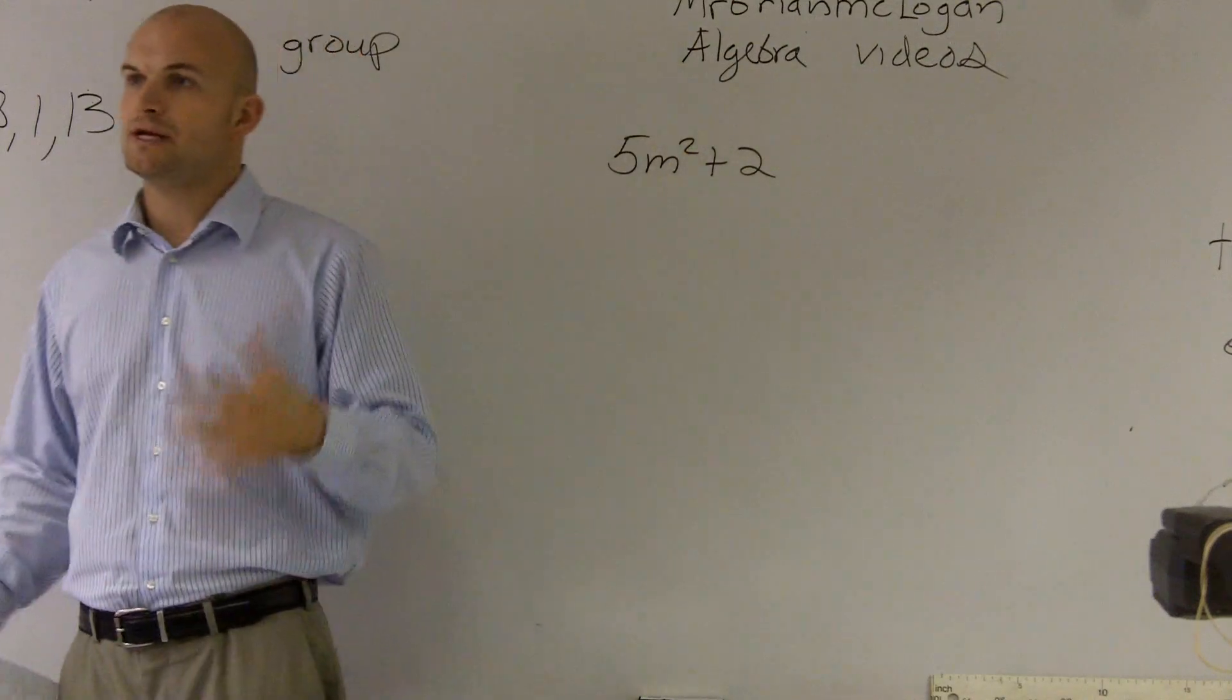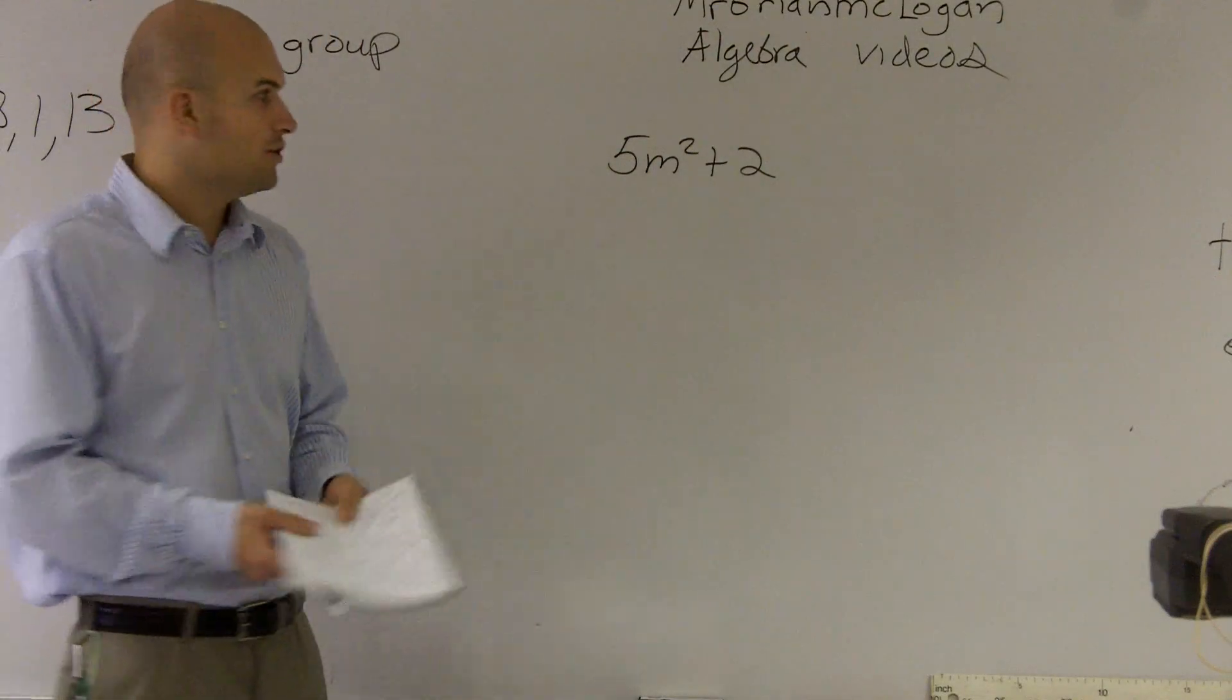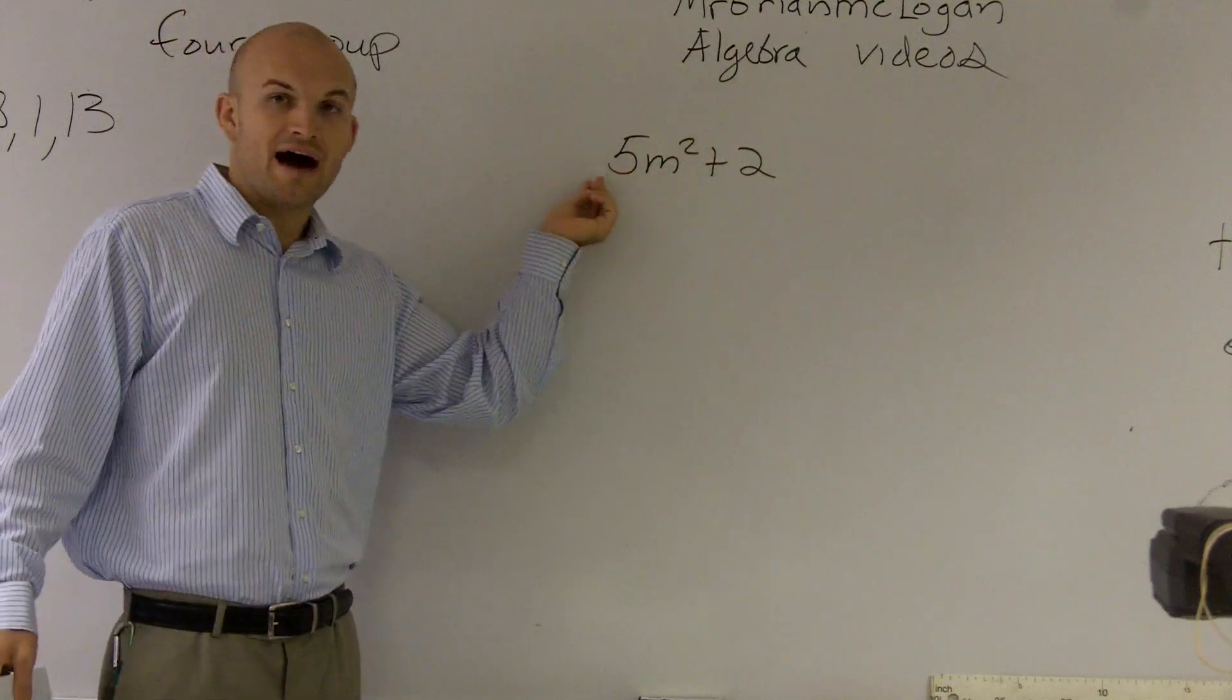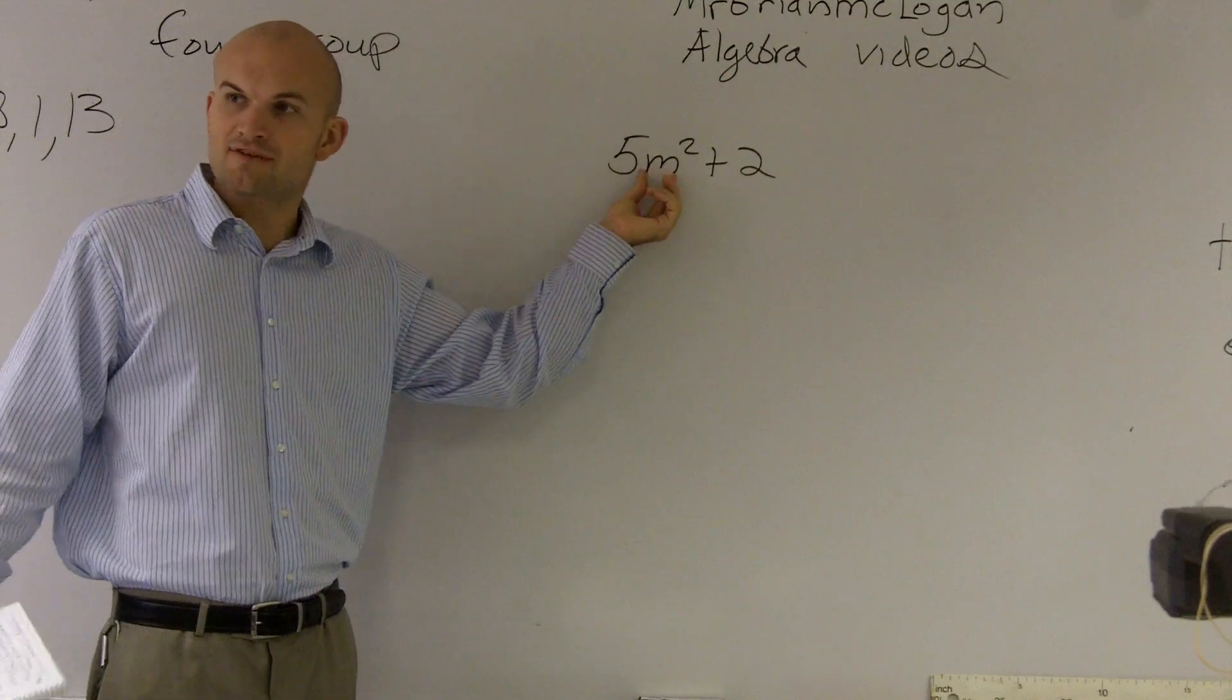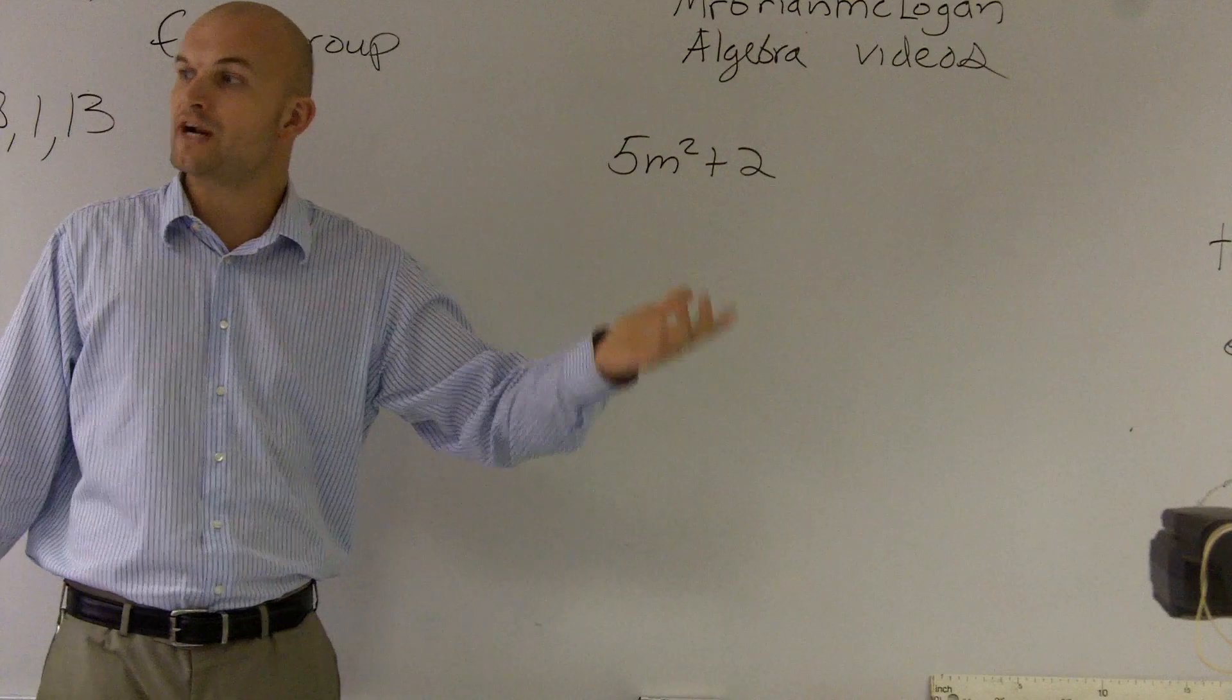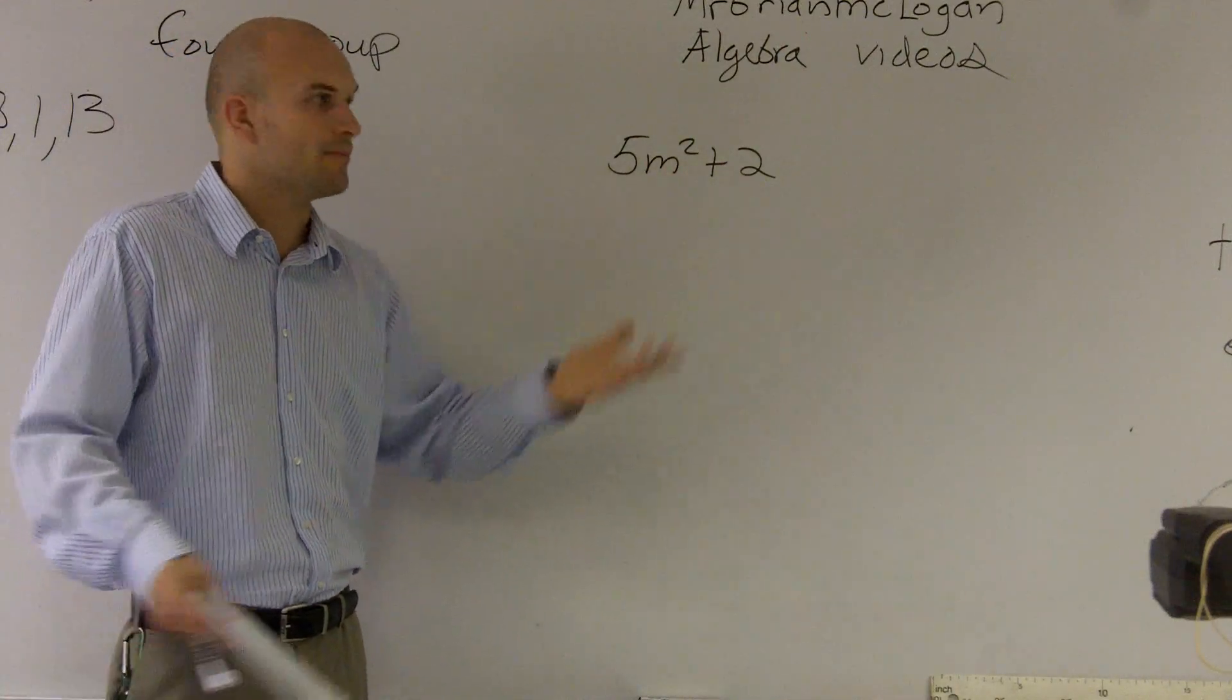What we need to do is work on the different ways we can say this. How do we say multiplication? Well, you could say 5 times—and instead of writing m, I'd like you to say a number because this letter represents something. That's why I call it a variable. We don't know what m represents, so we're going to call it a number.